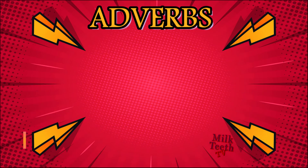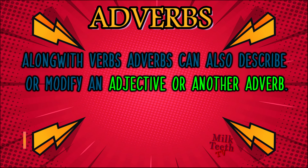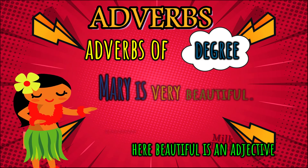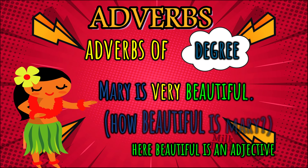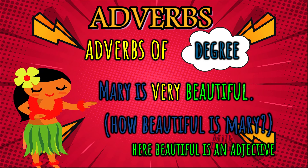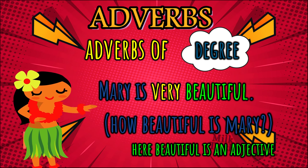Adverbs are words that modify verbs in the sentence, but along with verbs, adverbs can also describe or modify an adjective or another adverb. For example: Mary is very beautiful — 'beautiful' is the adjective, and 'very' tells us more about that adjective — how much beautiful is Mary? Very beautiful. So 'very' is an adverb of degree used to modify an adjective.